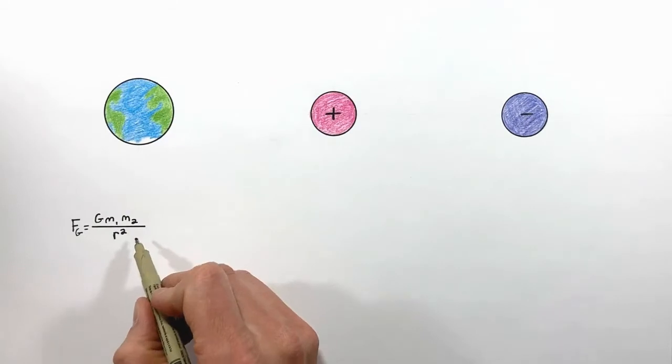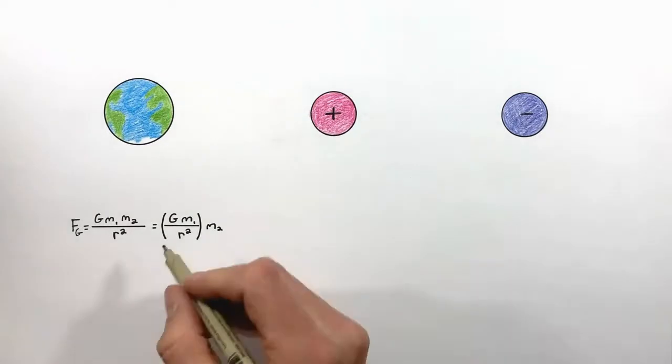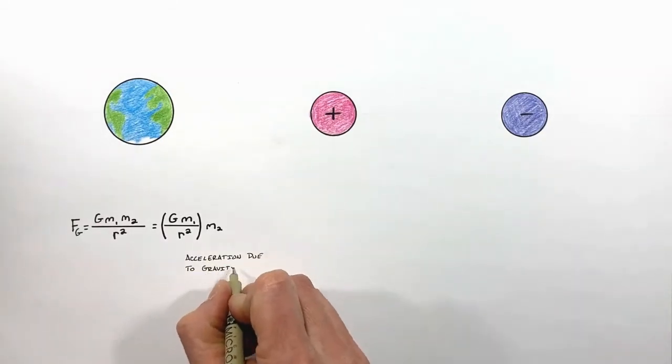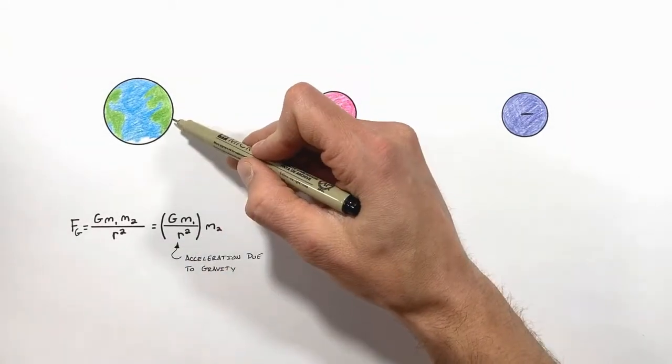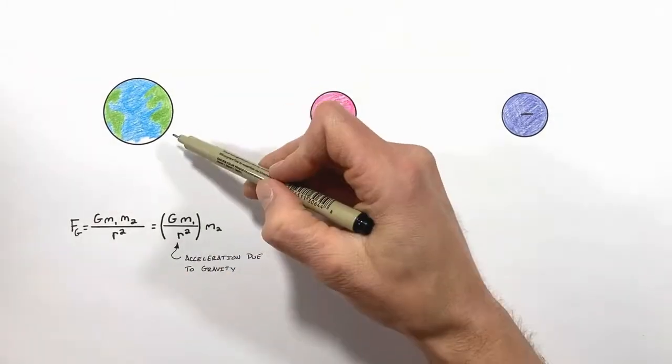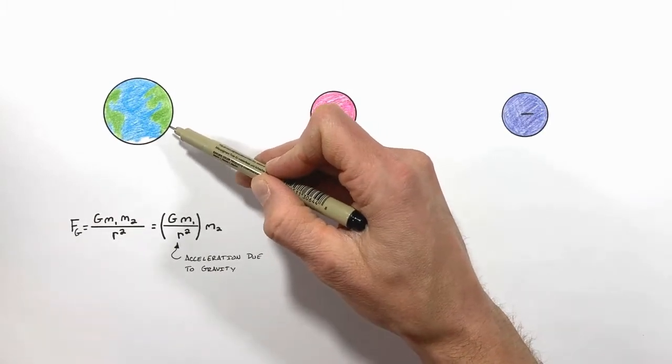This equation can be rearranged, and it's this term right here which we refer to more commonly as the acceleration due to gravity, which here on the surface of the Earth is 9.8 meters per second squared. We can show the magnitude and direction of the acceleration due to gravity using arrows.